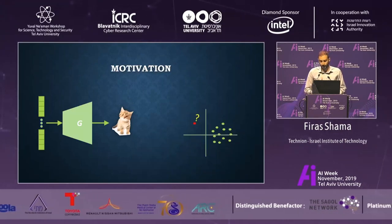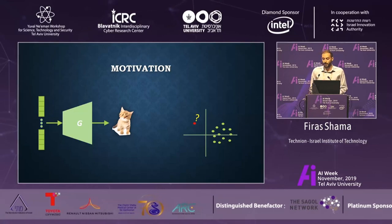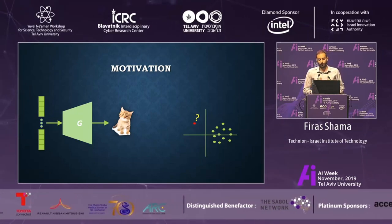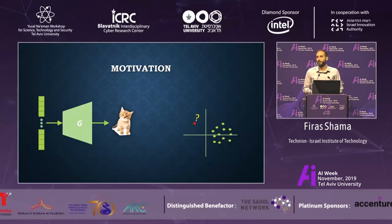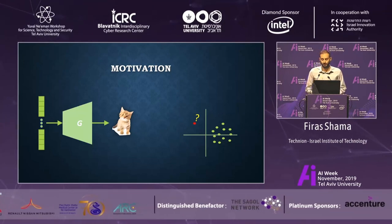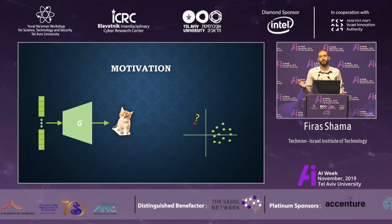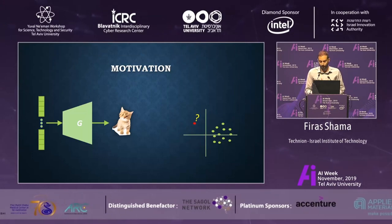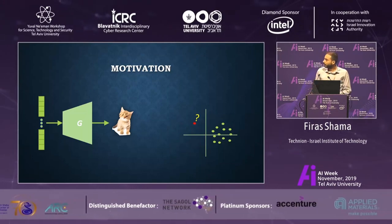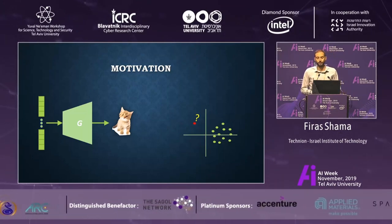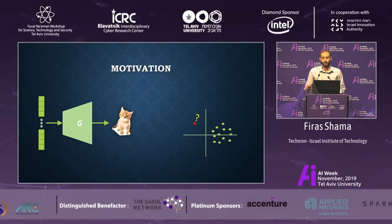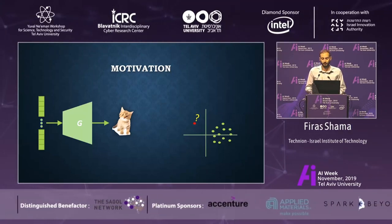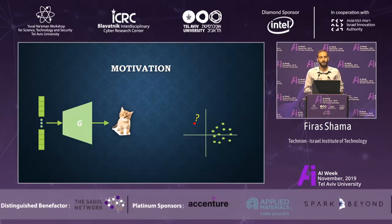Unfortunately, as we saw just a couple of slides ago, generators still generate artifacts — and in all kinds of GANs we see this issue. What we want to do here is detect those areas, know what features are fake, and fix them.